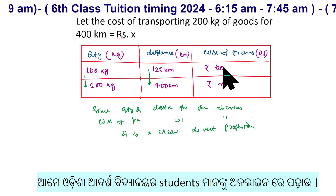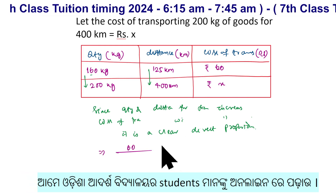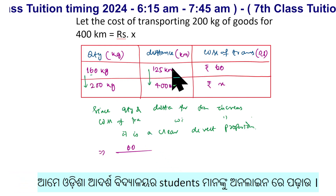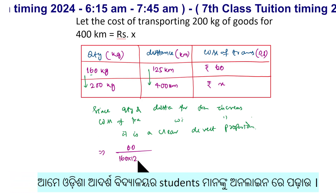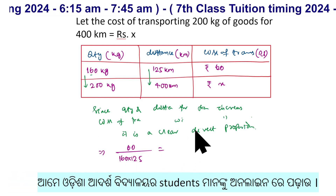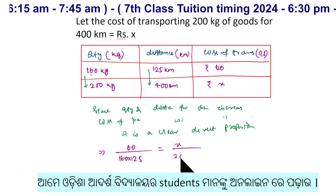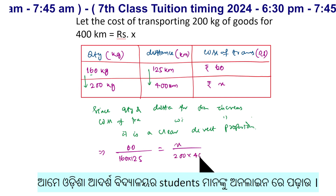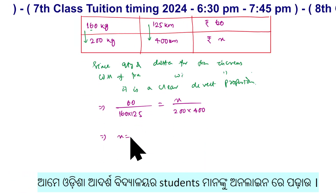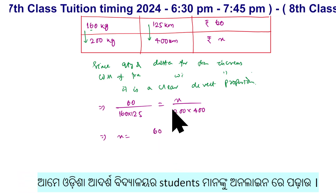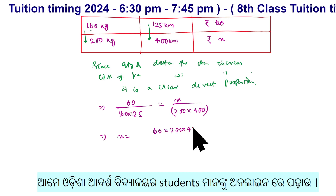By the direct proportion rule, the ratios are equal. So: 60 divided by (160 × 125) equals X divided by (200 × 400). Therefore X equals (200 × 400 × 60) divided by (160 × 125).